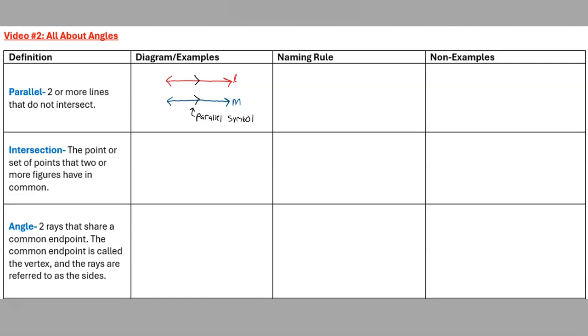Another symbol we need to think about is when we are writing out line L is parallel to line M. We can write those words out, but typically what we will see is this double line symbol that is a mathematical symbol meaning is parallel to. That's how you would read this statement: line L is parallel to line M.